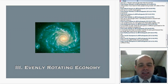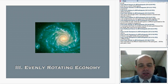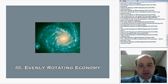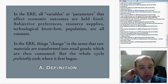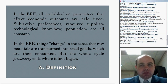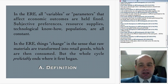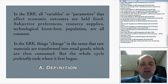Rothbard talks about the evenly rotating economy, which is going to be a very crucial concept in Austrian economics. It's an equilibrium concept — what Mises calls an imaginary construct. We never see this in the real world. Rothbard will also talk about different equilibrium concepts, as does Mises in Human Action. The ERE is short for evenly rotating economy. In the ERE, all the variables or parameters that affect economic outcomes are held fixed: subjective preferences, resource supplies, technological know-how, population — those are all constant.